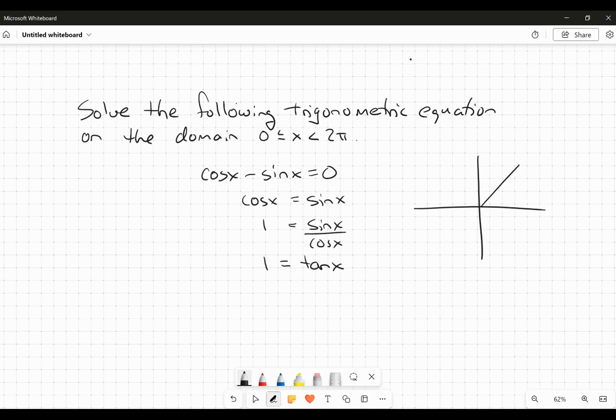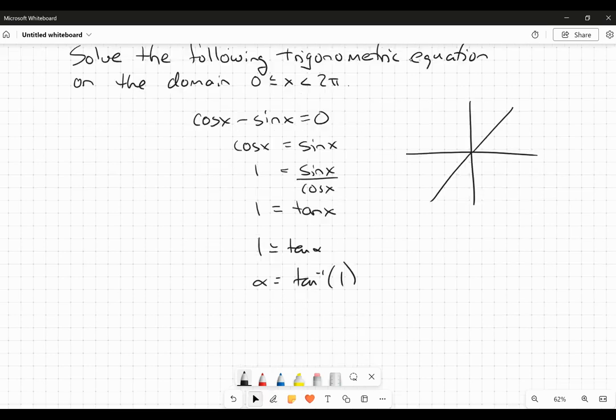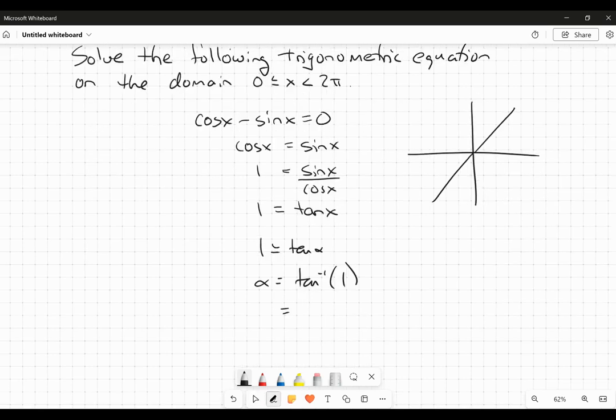Well, tangent is positive in quadrants one and three. Okay. Now we want to find the reference angle here. So alpha is going to be the inverse tangent of one. And in radians here, we're expecting you to have this sort of memorized, and you can memorize it any way you want really, but that's going to end up being π/4. So my reference angle is π/4. So this angle here is π/4.